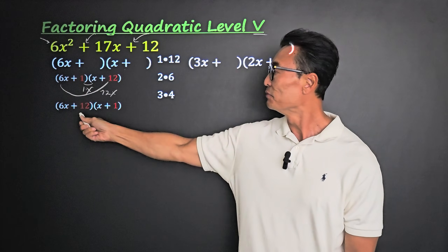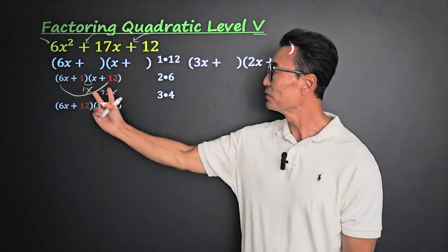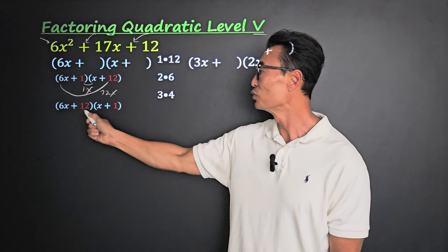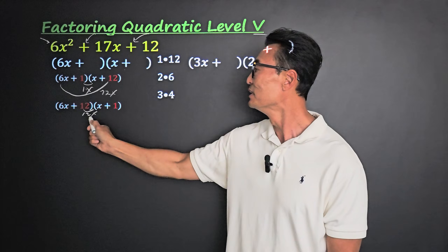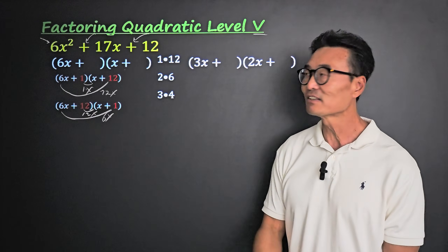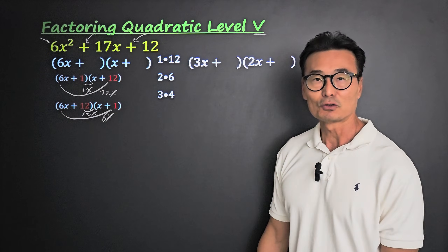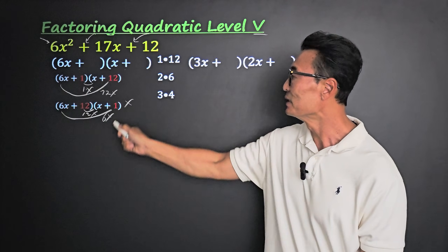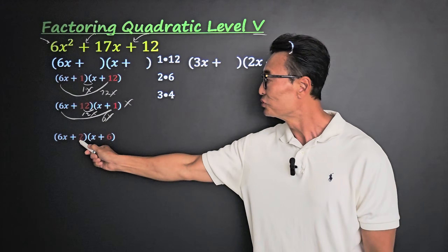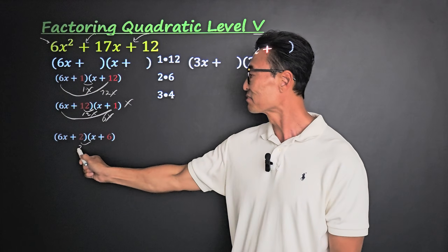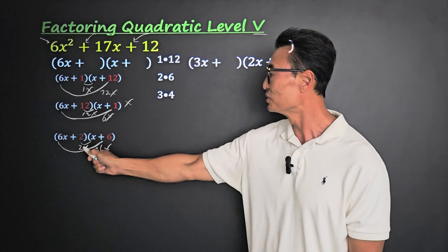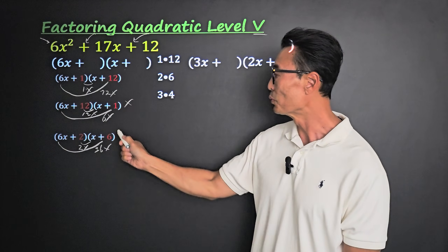Switching to 12 and 1: 12x from inside, 6x times 1 is 6x, giving 18x — close but not 17x. Trying 2 and 6: inner gives 2x, outer 6x times 6 is 36x, totaling 38x — not right. Switching to 6 and 2: inner gives 6x, outer 6x times 2 is 12x, giving 18x — still not 17x.